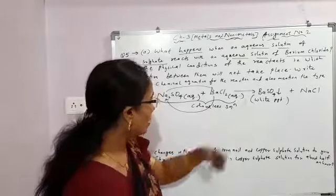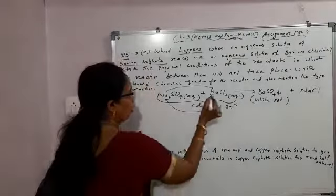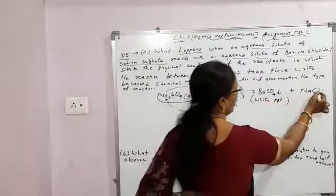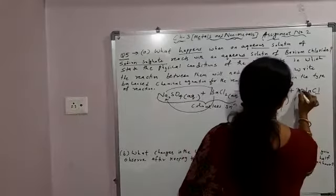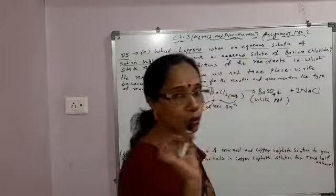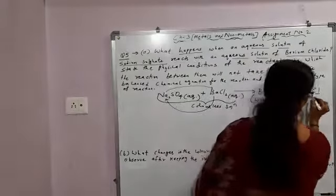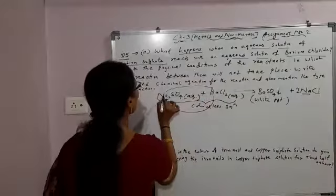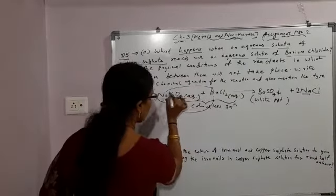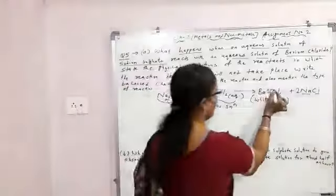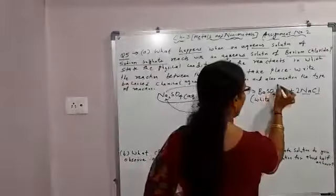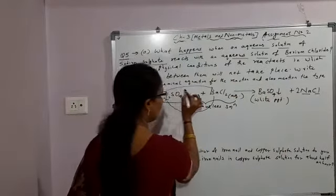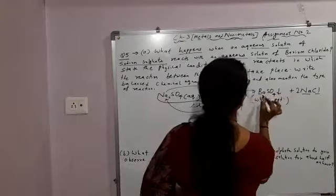Now you have to balance the equation. How many chlorides? 2. On the product side, 1. You have to make it 2, so in front of the formula you add 2. Now this 2 is for sodium also — sodium also becomes 2. Here sodium is 2. This is SO4, a polyatomic ion, present in the product also as SO4, a polyatomic ion. How many SO4? 1 on each side.